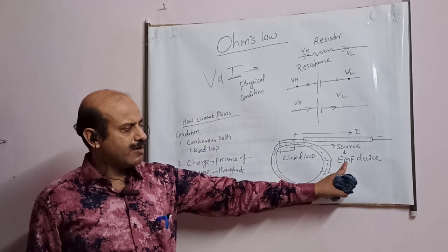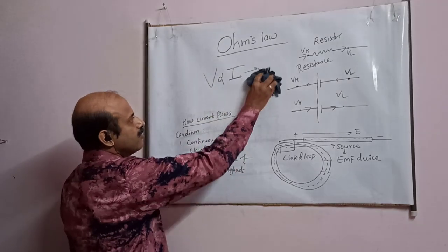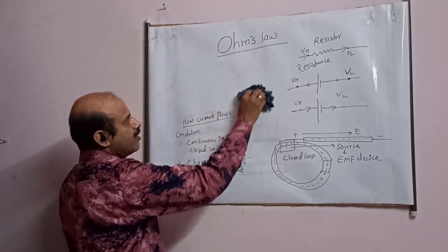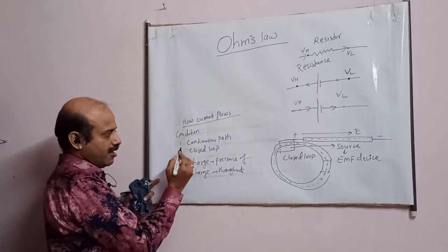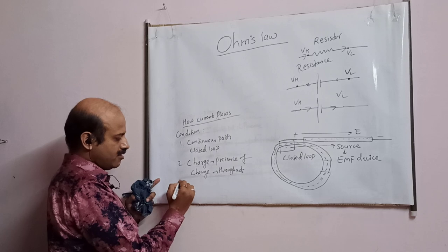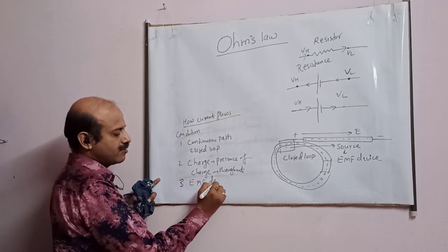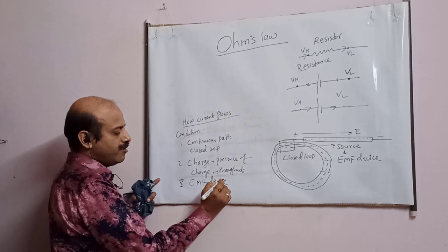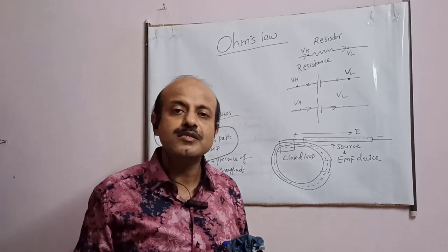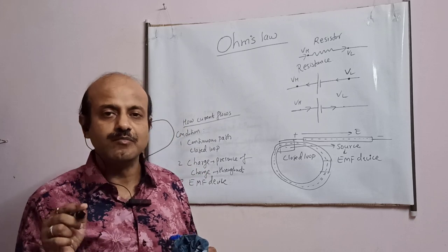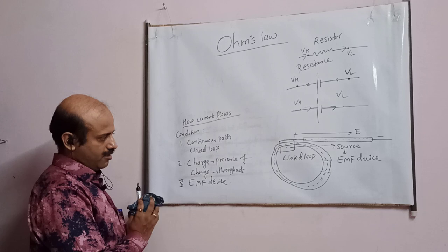This EMF device — the full form, already I told you — is electromotive force. So the three conditions are: first, a closed path; second, continuous presence of charge; third, there must be an EMF device. Have you understood the meaning of EMF device? It is the source which will supply energy to the charged particle to move.